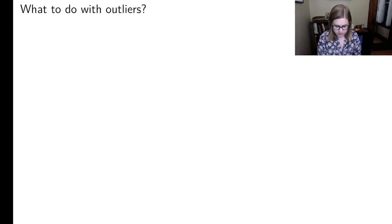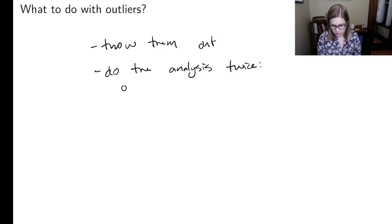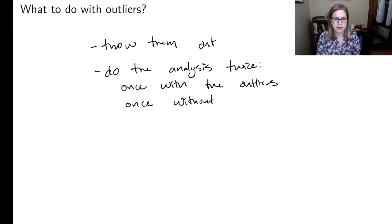So we have a couple solutions. One is throw them out. And the other is do the analysis twice. Once with the outliers and once without. I guess also those transformations that we talked about that will help the conditions get met. Those sometimes will reduce things that looked like outliers before to not look like outliers. Mostly it's just outliers are something to be aware of. And we've got a number of ways to identify them.